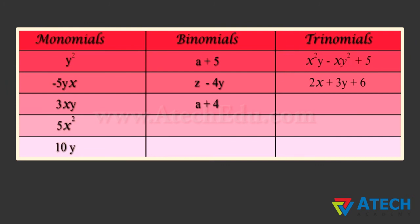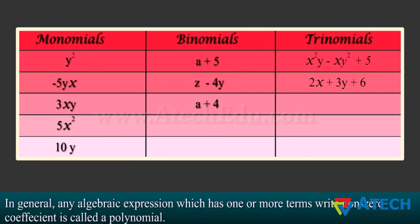An expression made up of only one term is called a monomial. Expression that contains two terms is called a binomial. An expression containing three terms is a trinomial and so on.